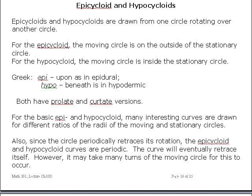For the rest of this lecture, I'm just going to give you the equations and discuss some of the properties of the epicycloid and the hypocycloid. The epi and hypocycloid are drawn from one circle rotating over another stationary circle. For the epicycloid, the moving circle is on the outside. Epi in Greek is a Greek word meaning upon, as in epidural.